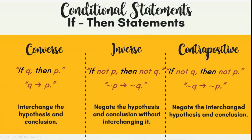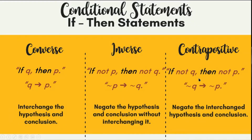For the inverse, we do not interchange but we negate the hypothesis and conclusion — using the opposite or antonym of the term. A synonym has similar meaning; an antonym has a different meaning. So we need the antonym. We usually just add 'not', but sometimes there is a more appropriate term — like 'unfriendly' instead of 'not friendly'. For the contrapositive, we negate the interchanged hypothesis and conclusion — the positions are swapped and 'not' is added. In symbols, the tilde (~) represents 'not'.